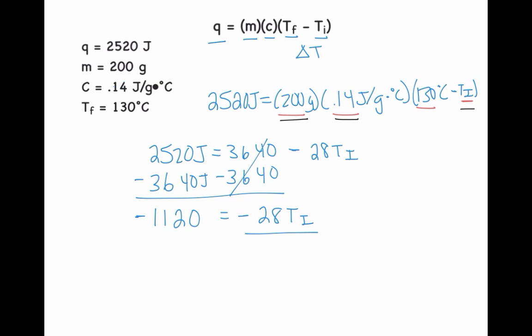The next thing that I want to do is isolate the temperature initial. So I'm going to divide both sides by negative 28. These cancel out. And when I divide those two out, I get my temperature initial to equal 40 degrees Celsius.